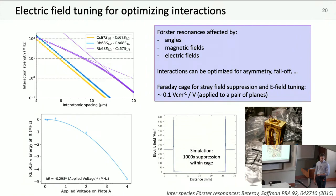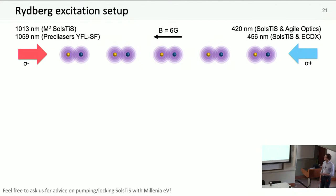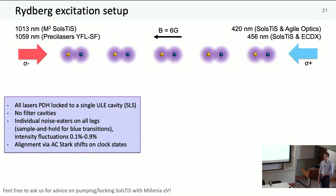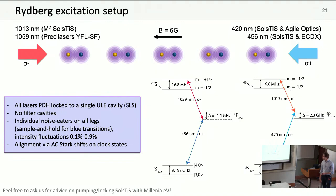Let's jump into the experiments. Our excitation experiment looks fairly standard. We have two pairs of counter-propagating beams: 420 and 1013 for rubidium, 1059 and 456 for cesium. All experiments are performed on five rubidium-cesium dimers. All our lasers are PDH locked to one ULE cavity. There is no filter cavity, but we do have noise eaters. That gives us about a percent intensity fluctuations at worst. We do all our alignment via AC Stark shifts on the clock states.